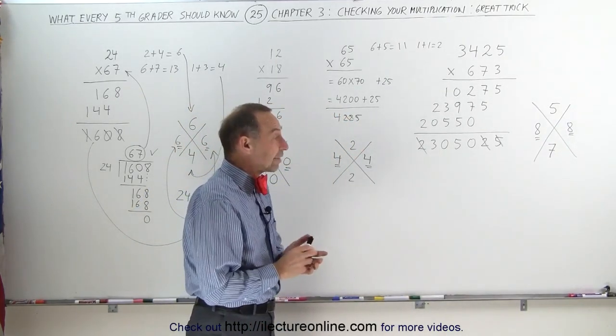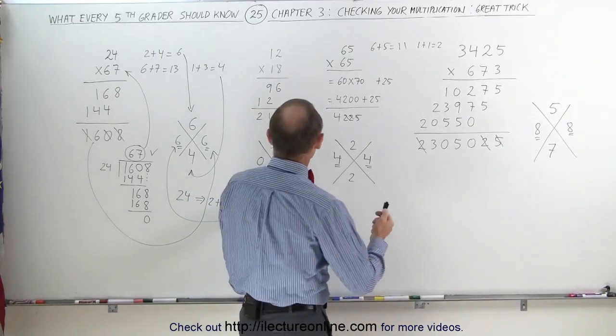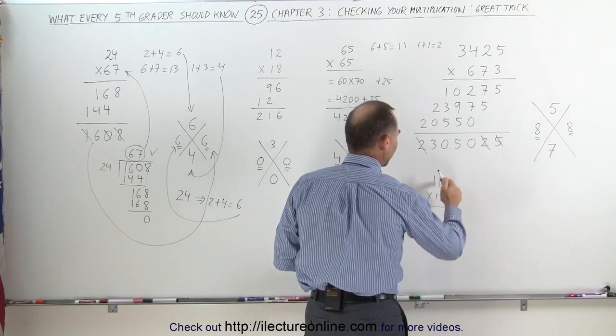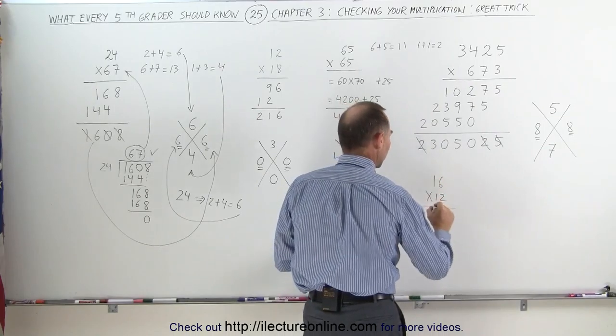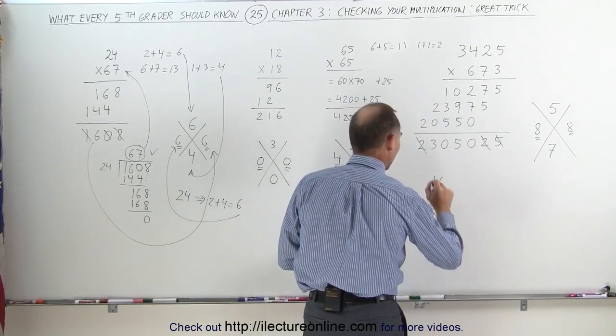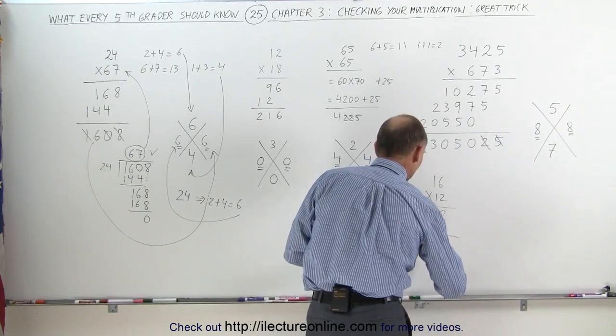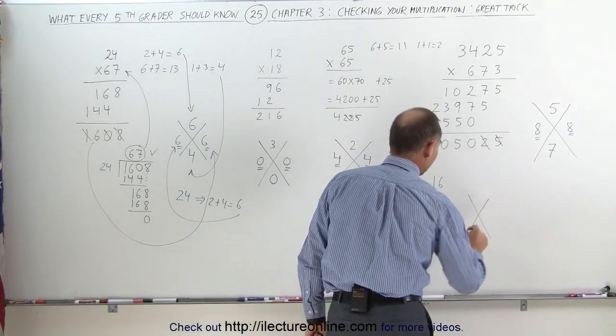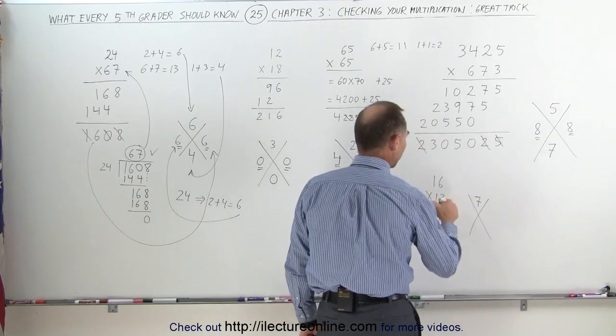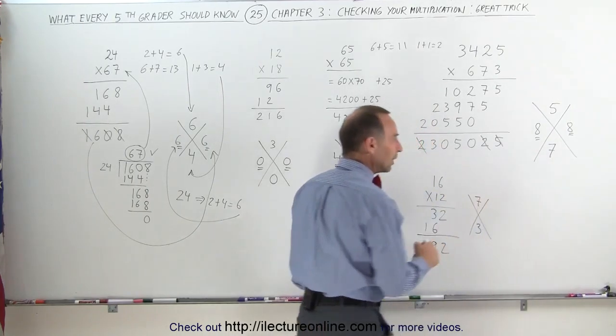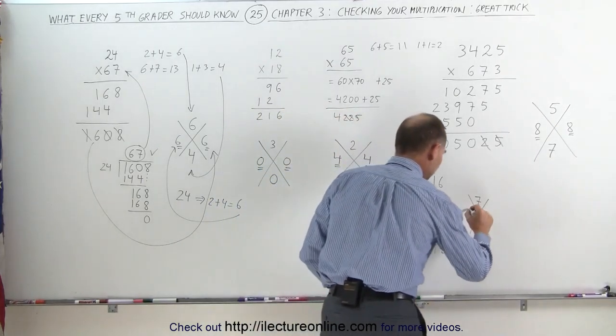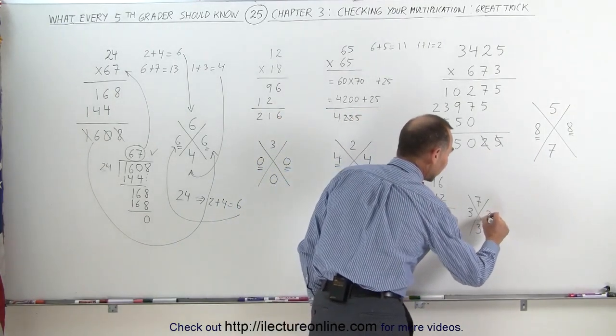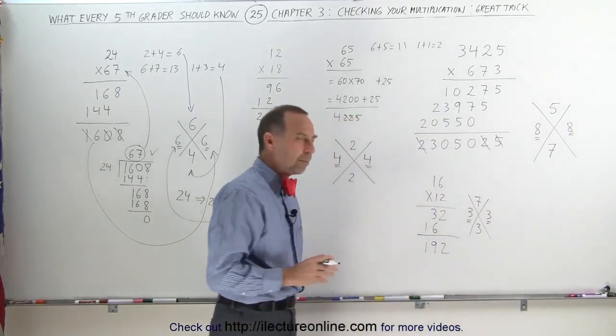Now let's illustrate why we say that sometimes this trick doesn't work. For example, if we take the multiplication, how about 16 times 12? 2 times 6 is 12, write down the 2, remember 1. 2 times 1 is 2, plus 1 is 3. 1 times 6 is 6, 1 times 1 is 1, add these together, you get 192. Now, again we'll use the trick to see if we did this correctly. You write down the two lines, and 1 plus 6 gives me a 7, 1 plus 2 gives me a 3. 3 times 7 is 21, that's a 2 and a 1, add those together, you get a 3. And when we add these numbers together, they better add up to a 3. 9s disappear, we have a 1 and a 2 left, that equals 3, and sure enough, we did it correctly.